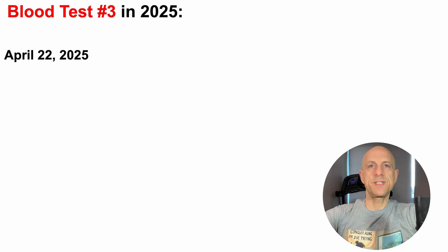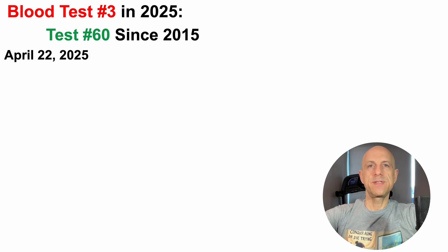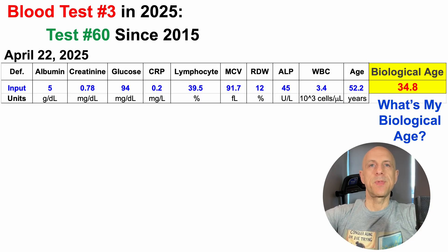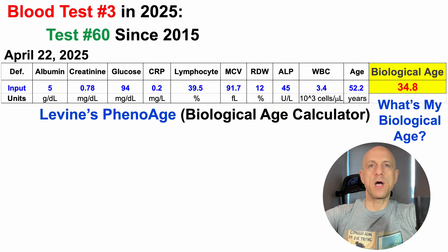Last month, I blood tested for the third time in 2025. Note that this is test number 60 since 2015. So with that in mind, what's my biological age? That's what we'll see here. This is using Dr. Morgan Levine's biological age calculator, PhenoAge.